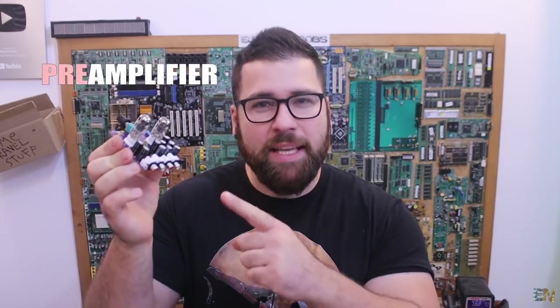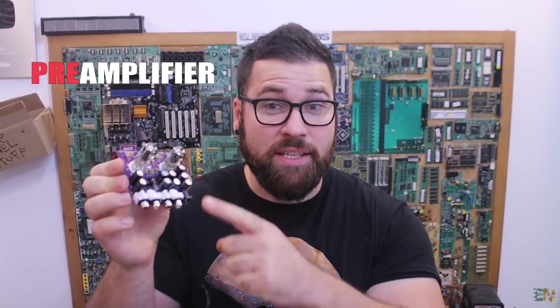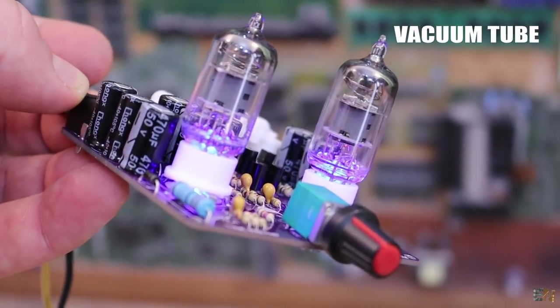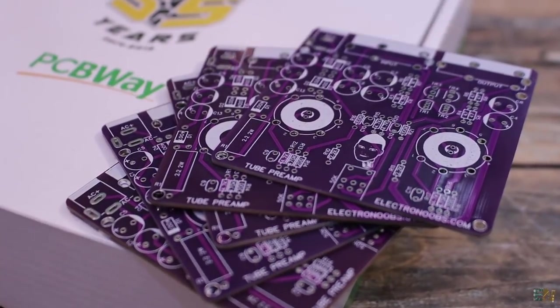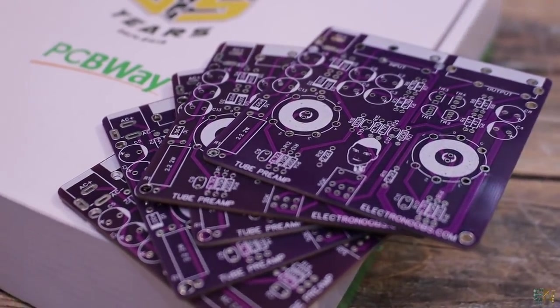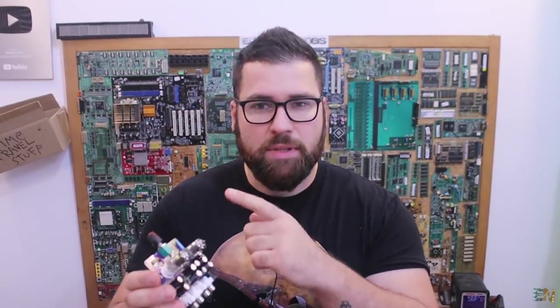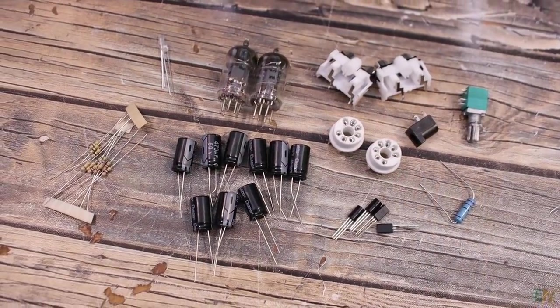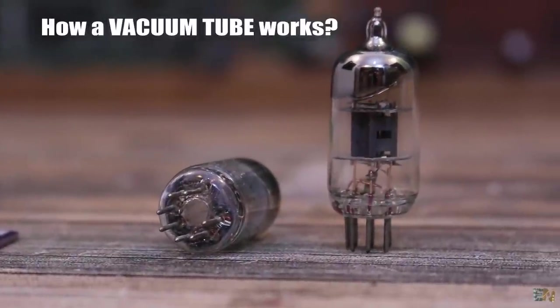Hey guys, this here is a pre-amplifier board but it's not made with transistors. As you can see, it's made with vacuum tubes. I've designed this PCB and ordered it from PCBWay, and I've also ordered all the needed components to mount it - the tubes, the sockets, the resistors and capacitors and so on. In this video I want to show you how a vacuum tube works, and that will be quite interesting, so stick till the end.